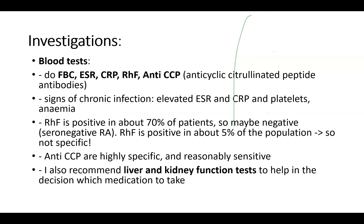For investigations, if you suspect rheumatoid arthritis, you should do a full blood count, ESR, CRP, rheumatoid factor, and anti-CCP antibodies. You will usually see signs of chronic inflammation: elevated ESR and CRP and platelets, and anemia of chronic inflammation. The rheumatoid factor is positive in about 70% of patients.